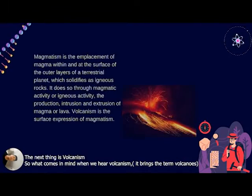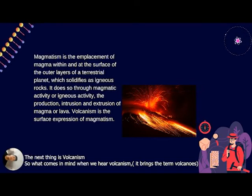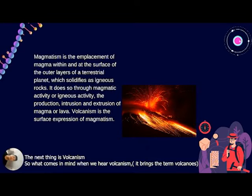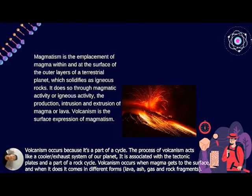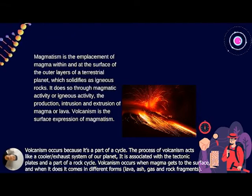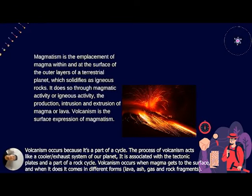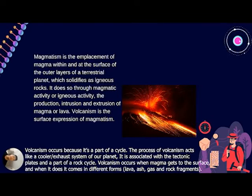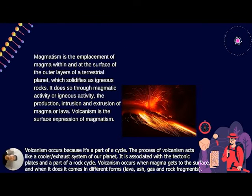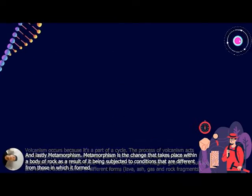The next is volcanism. What comes to mind when you hear volcanism? It brings to mind volcanoes. Volcanism occurs as part of a cycle — the process acts like a cooling system for our planet. It is associated with tectonic plates and is part of the rock cycle. Volcanism occurs when magma reaches the surface. The material comes in different forms: lava, ash, crust, and rock fragments.